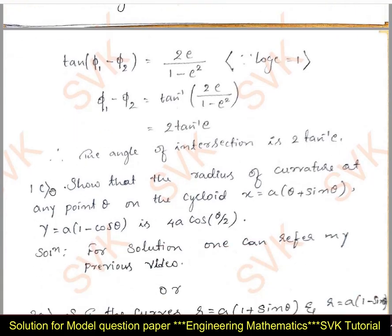Moving on to question number 1c: show that the radius of curvature at any point θ on the cycloid x = a(θ + sin θ), y = a(1 − cos θ) is 4a·cos(θ/2). The solution has been given in the previous video; you can refer to my previous video. The link will be provided in the description.